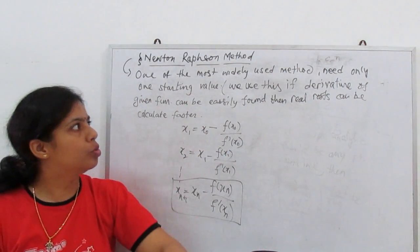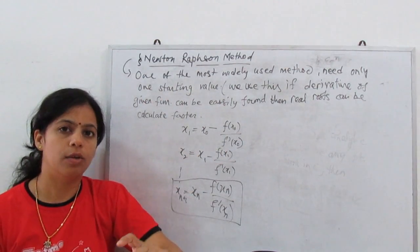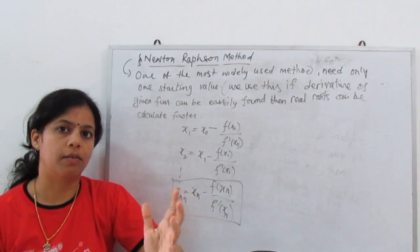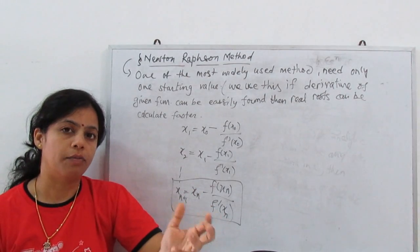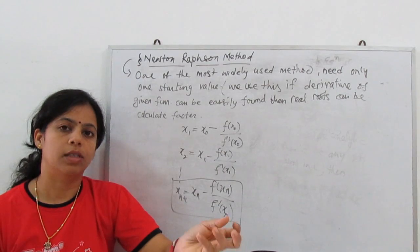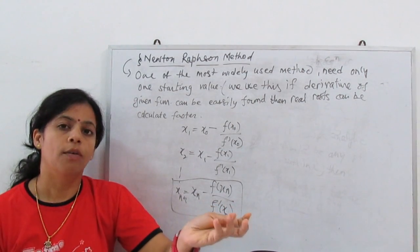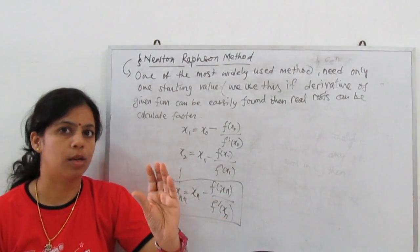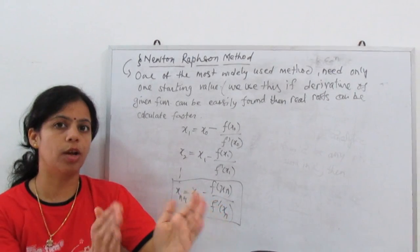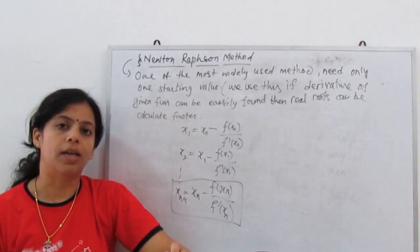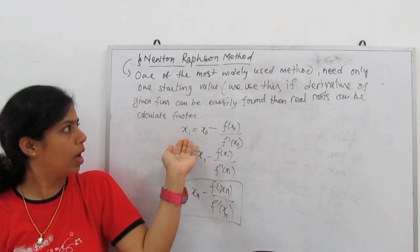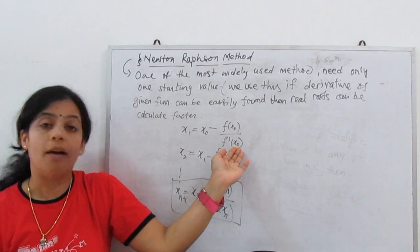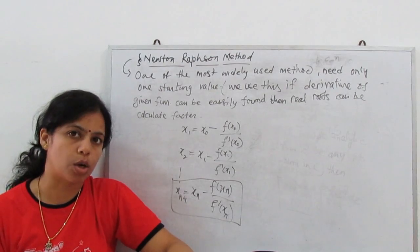It is the most widely used method and needs only one starting value. If we have only one starting value, first we find the value of the equation. For a one-variable equation, we check x=0 and x=1: at x=0 we get a positive value, at x=1 a negative value, so the root lies between 0 and 1. We consider x₀, and the formula is x₁ = x₀ − f(x₀)/f′(x₀), where f′ denotes the first-order derivative.